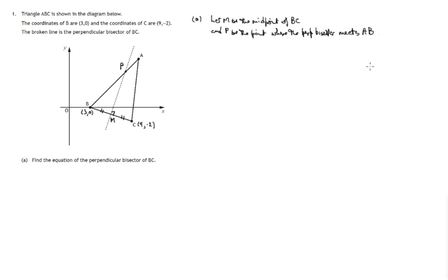So equation of a line. Remember the way to find the equation of a line: we need to know its gradient, we need to know a point on that line. And we can then use the y minus b equals m times x minus a formula to find that equation. So let's have a look. First of all, do we know a point on this line?